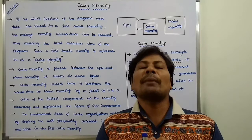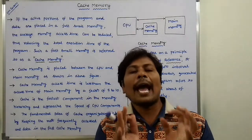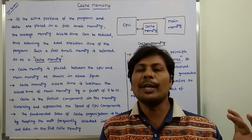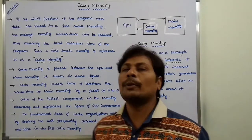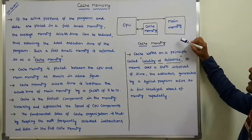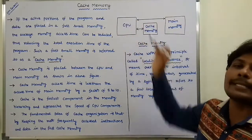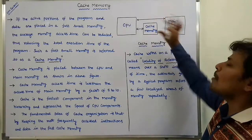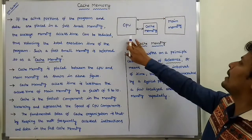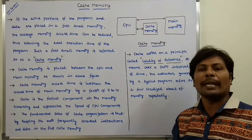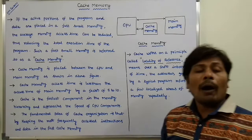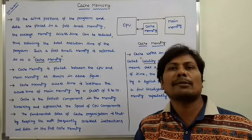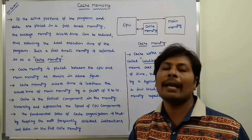Where is cache memory located? Cache memory is placed in between the CPU and main memory, as shown in this figure. Here the first block is CPU and the third block is main memory, with cache memory located in between. Cache memory is the fastest memory component in the memory hierarchy.